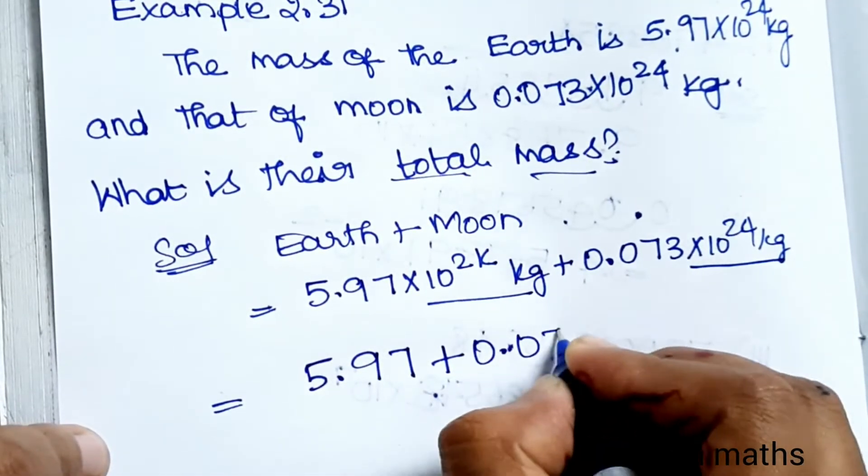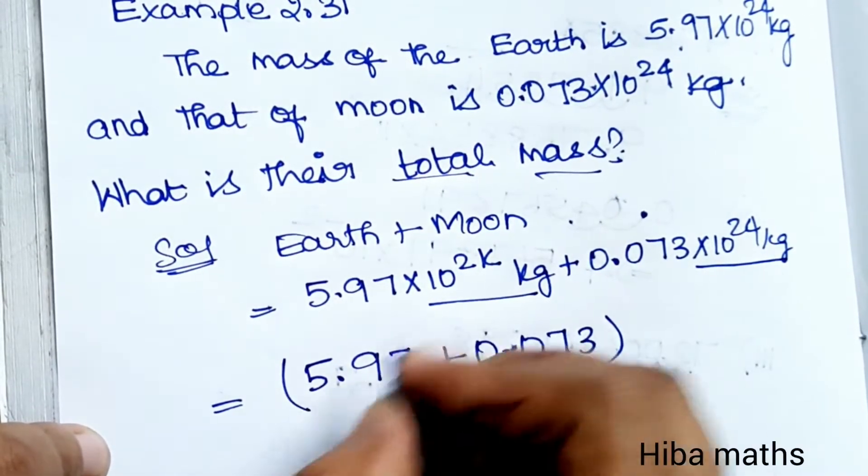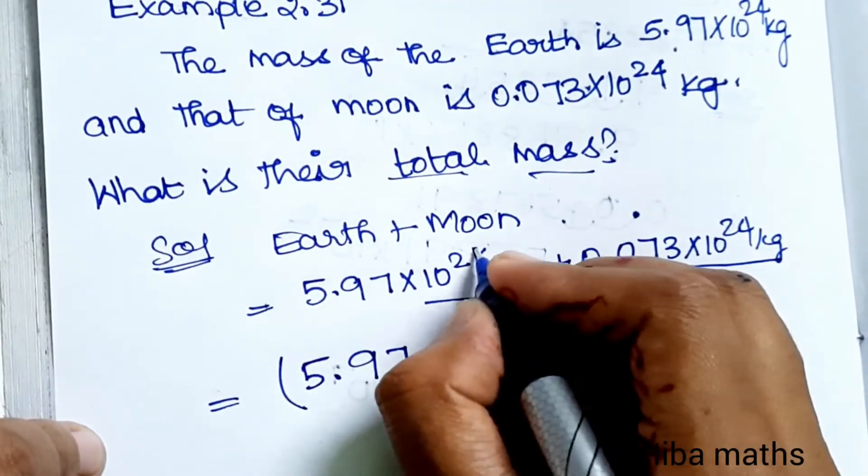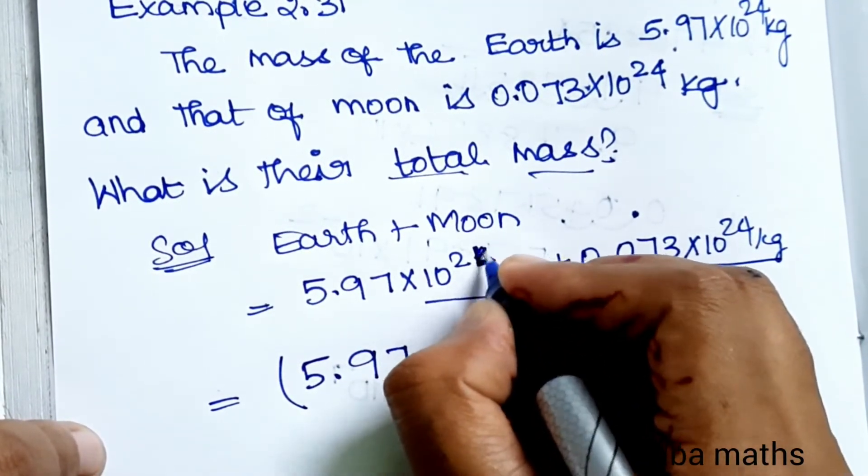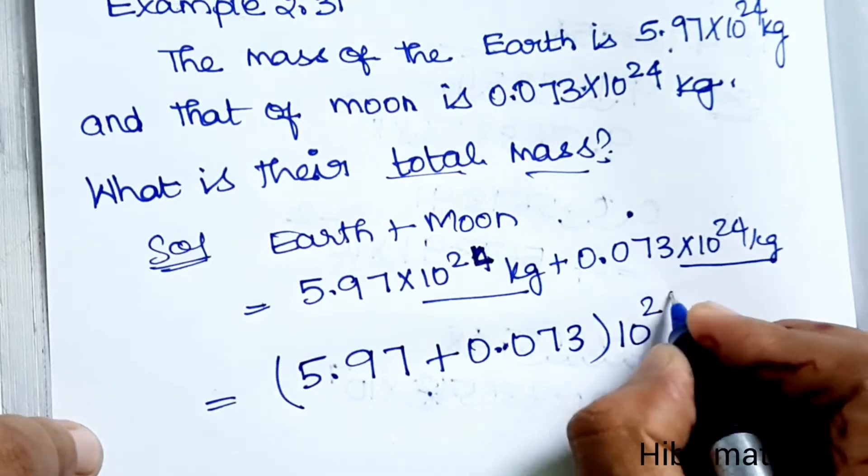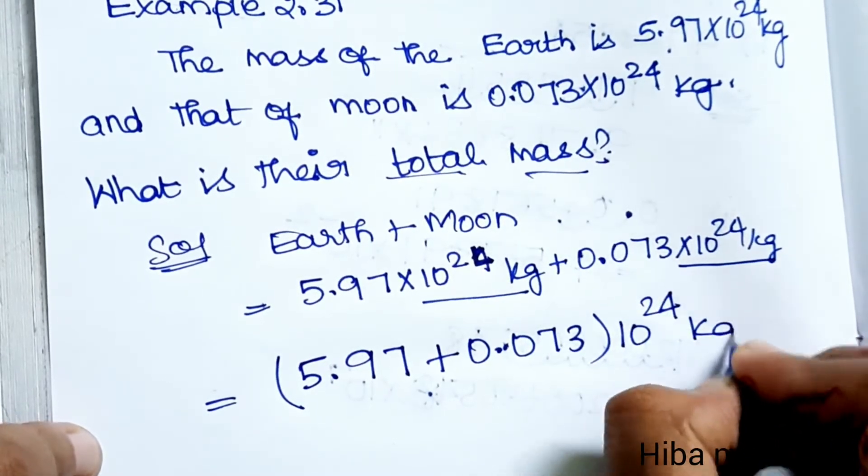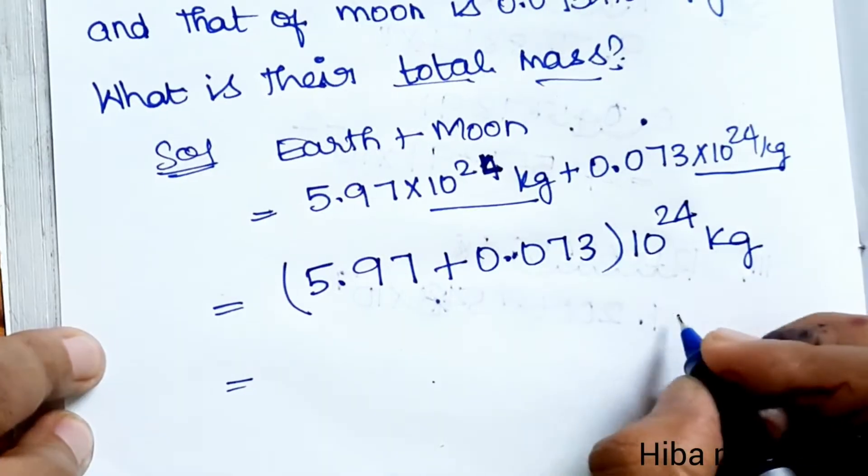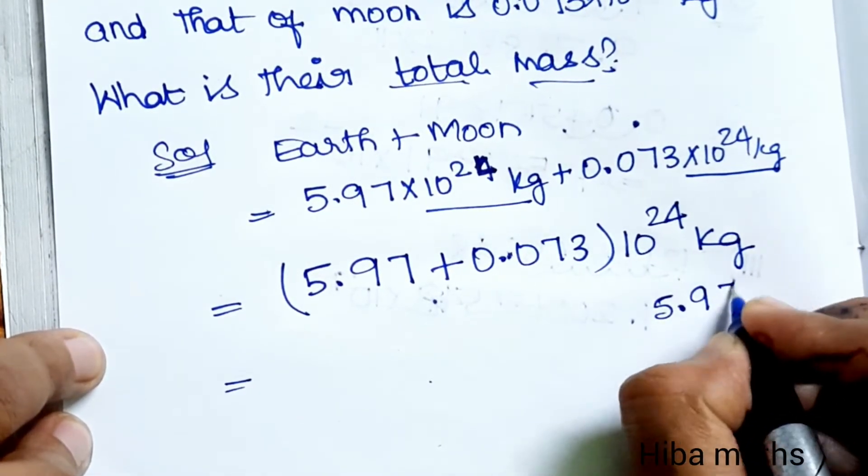Now let's add these two: 5.97 plus 0.073.